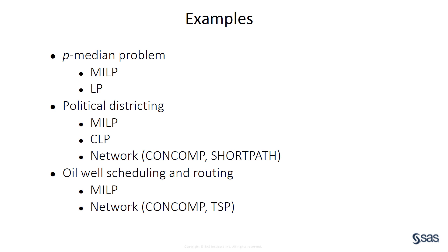The first example is the p-median problem, which is a type of facility location problem. It uses both the mixed integer linear and linear programming solvers. The second example is a political districting problem that uses MILP, constraint programming, and two algorithms from the network solver: connected components and shortest path. The third example is an oil well scheduling and routing problem that uses the MILP and network solvers, again to compute connected components, but also to solve several traveling salesman problems that arise.